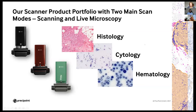PreziPoint has three basic devices: the M8, the O8, and the Fritz. The M8 scans histological and cytological slides. The O8 is for hematology slides and can scan with oil immersion, whereas the M8 and Fritz scan with air immersion objectives only. All devices have both a scanning mode and the live microscopy mode demonstrated earlier.